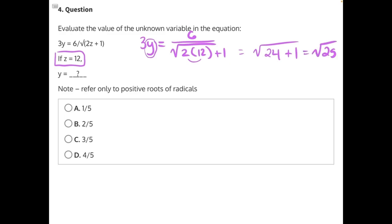And there is a square root of 25. That square root is equal to 5, because 5 times 5 gives us 25. So now this number is our new denominator. Let's rewrite the equation. 3y equals 6 over 5.